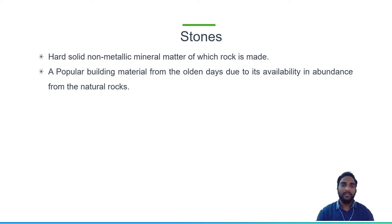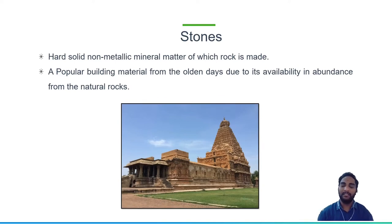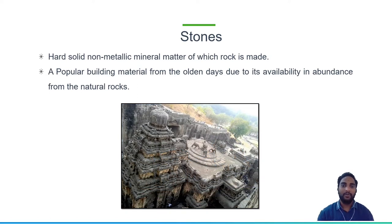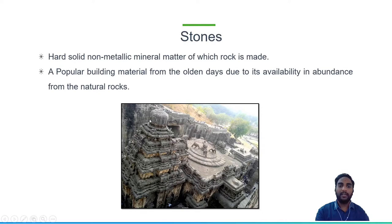Coming to today's topic — stone. A stone is basically a hard, solid, non-metallic mineral matter of which a rock is made. A mineral is an inorganic substance abundantly available in nature. In ancient days, every kind of wall, roof, or structure was made using stones. Ancient temples like the Brihadeswara temple in Tanjore and Kailasa temple in Ellora are completely rock-made. The Kailasa temple is called Ekashila — carved out from a single rock. A group of stones combined forms a rock, and for building purposes we convert those rocks into usable stones.